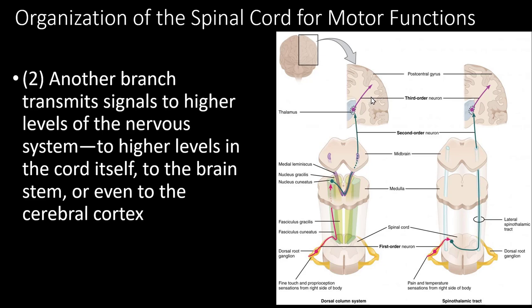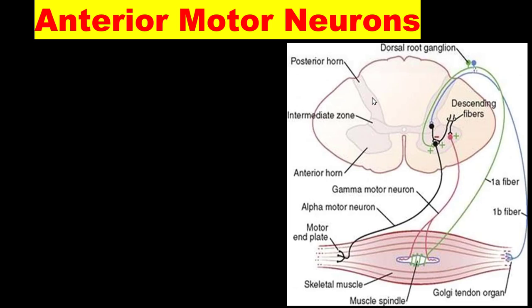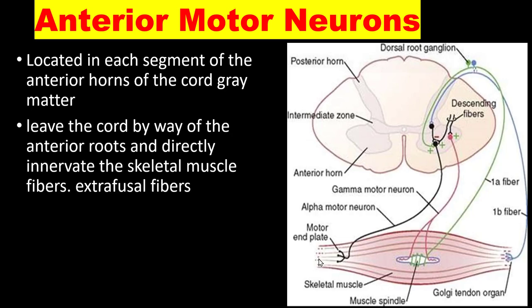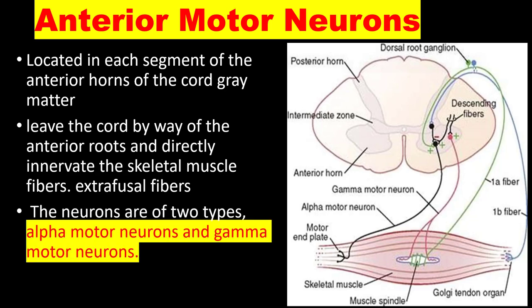Anterior motor neurons are located in the anterior horn of the cord's gray matter. They leave the cord by way of the anterior root and directly innervate the skeletal muscle fibers called extrafusal fibers. These anterior motor neurons are located in the anterior horn of the spinal cord, leave through the anterior root, and directly innervate the skeletal muscle. These muscles are called extrafusal fibers. Anterior motor neurons are of two types: alpha motor neurons and gamma motor neurons.